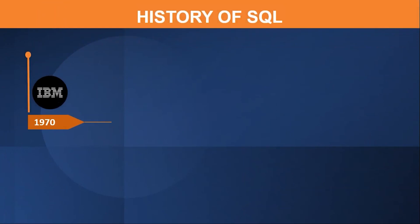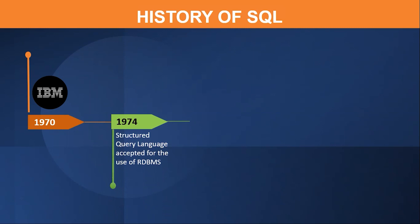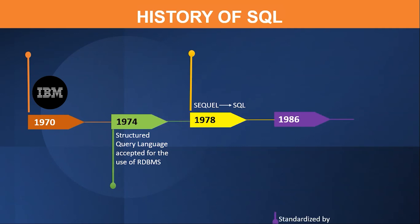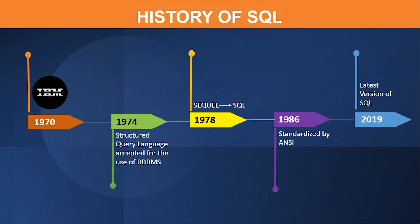Let us now look at the history of SQL. SQL was developed by IBM in the year 1970. Dr. Codd and Donald Chamberlain proposed a paper on usage of relational database management. They came up with SQL, which can be used to perform operations on data stored in the databases. SQL was made publicly available and was accepted for the use of relational databases in the year 1974. Initially, the language was known as Structured English Query Language, pronounced as SEQUEL, which was later changed to SQL in the year 1978. The American National Standards Institute, ANSI, and other international organizations standardized SQL as a language for database communication in the year 1986. Though companies use different versions of SQL nowadays, the latest version was released in 2019 by Microsoft.